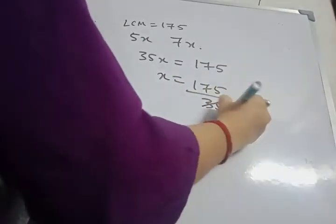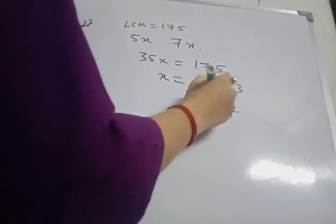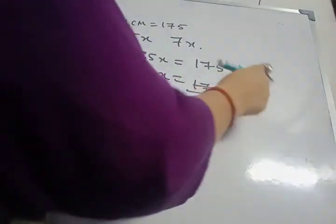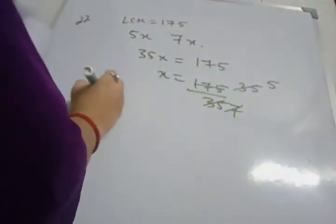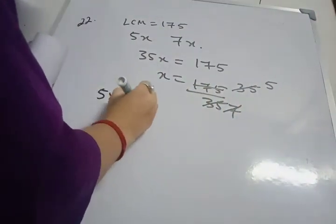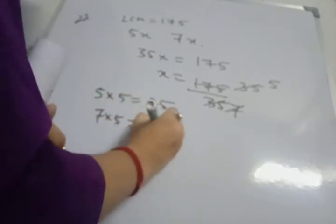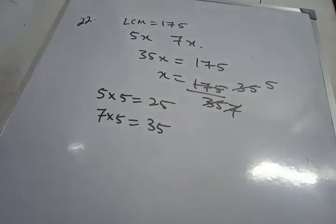So 7s are 35, 3s are 15, 5s are 35. So the numbers are 5 into 5 that is 25 and 7 into 5 that is 35. So 35 and 25 is the answer. Next sum.